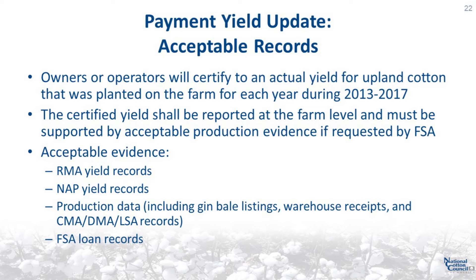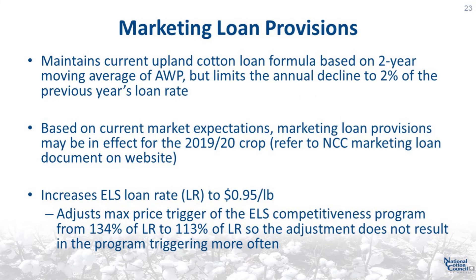The information in this slide will cover the 2018 Farm Bill provisions relating to the cotton marketing loan. The 2018 Farm Bill maintains the current upland cotton loan formula based on a two-year moving average of the AWP, but limits the annual decline to 2% of the previous year's loan rate. Based on current market expectations, marketing loan provisions may be in effect for the 2019-20 crop. An updated document on marketing loan provisions is available on the NCC website. The loan rate for ELS cotton was increased to $0.95 per pound. The maximum price trigger of the ELS competitiveness program was changed from 134% of the loan rate to 113% of the loan rate, so the adjustment does not result in the program triggering more often.